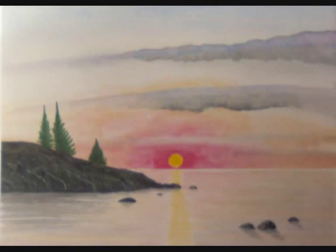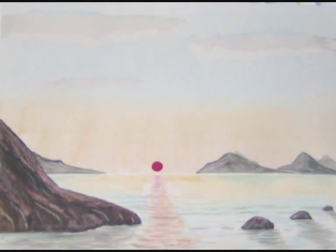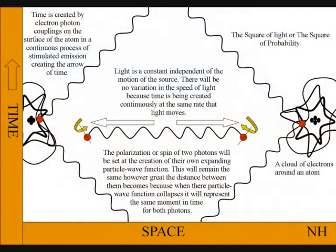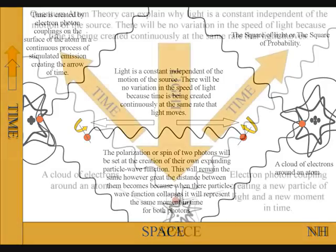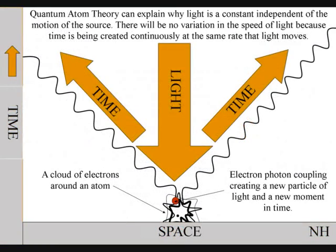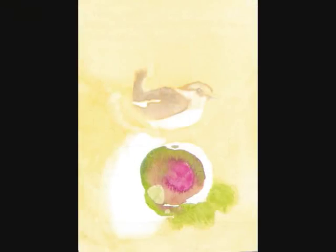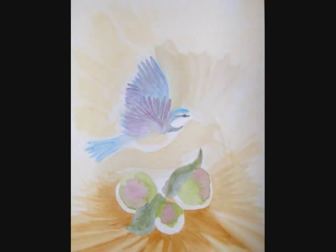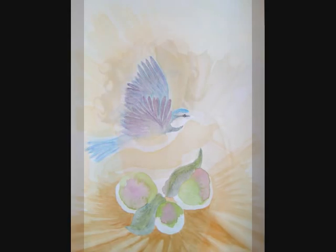Because each atom is creating its own space-time at the same rate that light moves, the expanding wave function of light between atoms will always be a universal constant, independent of the motion of the source. This can also explain why light is so beautiful when it strikes an object — because we are looking at a moment of pure creation of time and space.